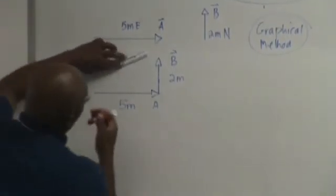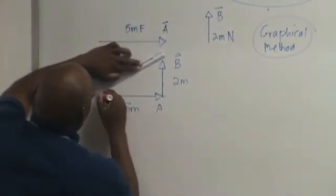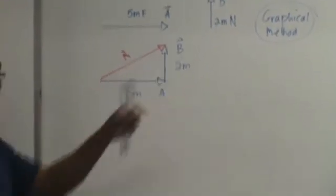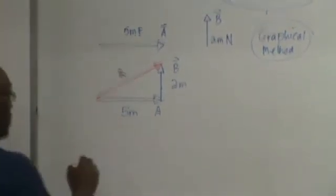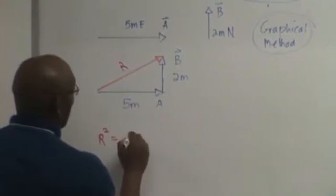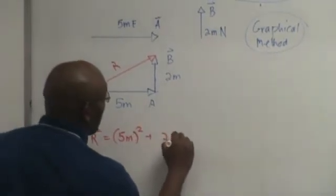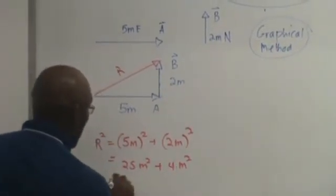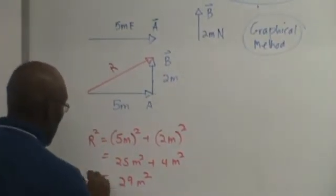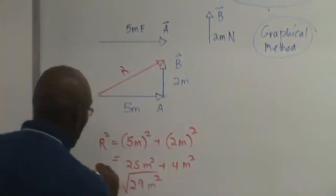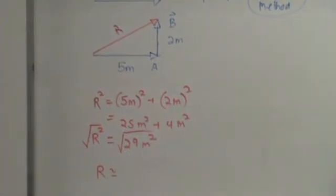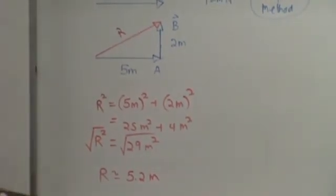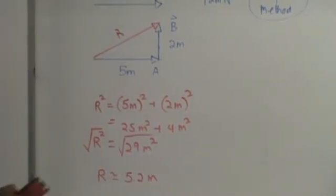Where is our resultant? R, from the tail of the first to the tip of the second. As you can see this is a right triangle. So R squared is equal to 5 meters squared plus 2 meters squared, 25 meters squared, 4 meters squared, 29 meters squared. R squared, take the square root of both sides and get R approximately equal to 5.25 meters. So that's how you do that when your vectors point perpendicular to each other.